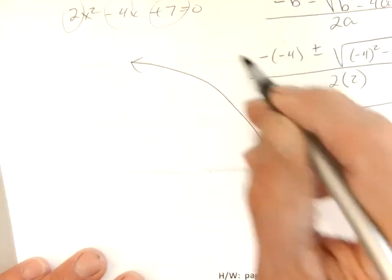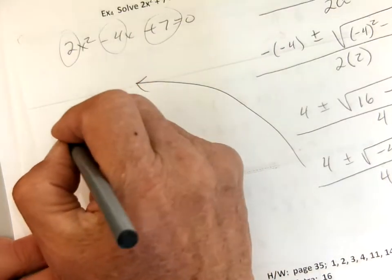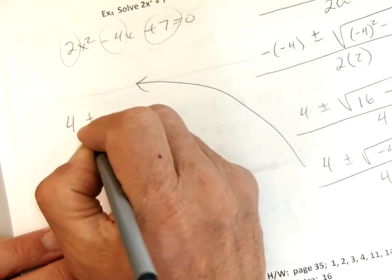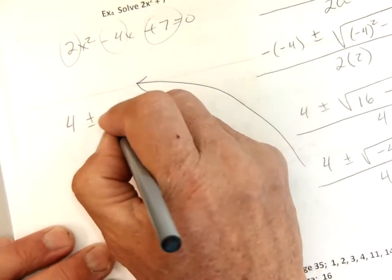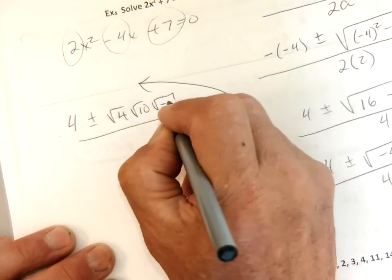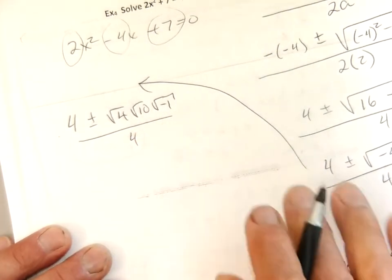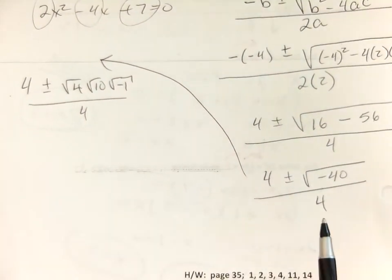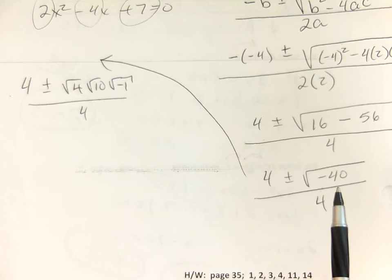So I'm going to have 4 plus or minus, and I'm going to break this down. Square root of 4, square root of 10, square root of negative 1 over 4. Here's my 40, 4 times 10, and then I've got my negative 1. And so why did I break it up into 4 and 10? Why not 2 and 20? Because we can take the square root of it.